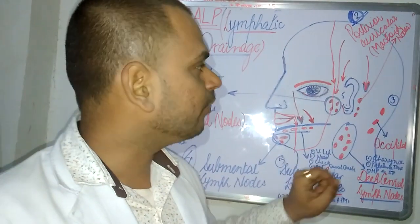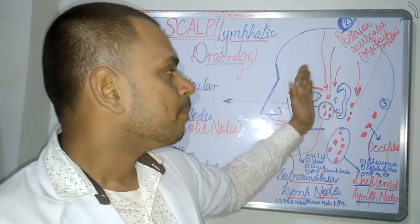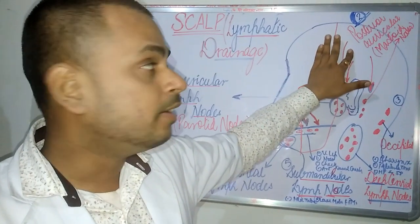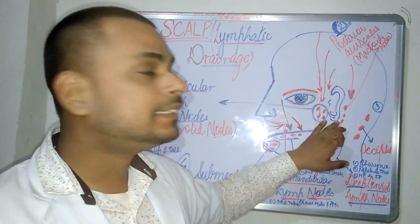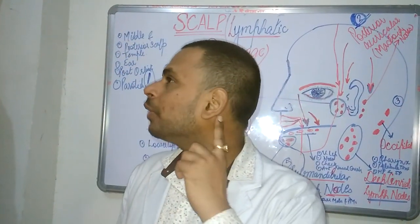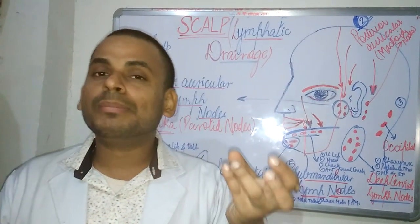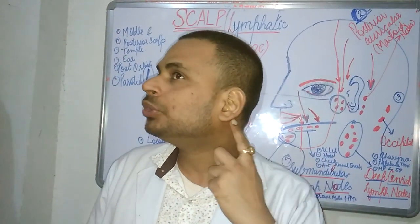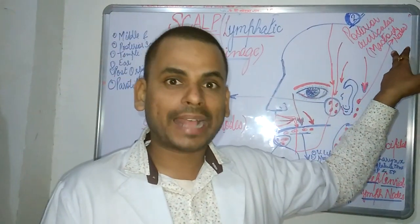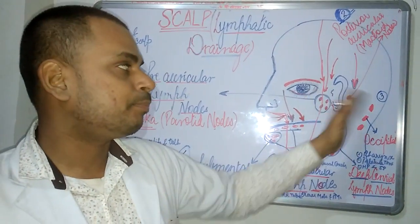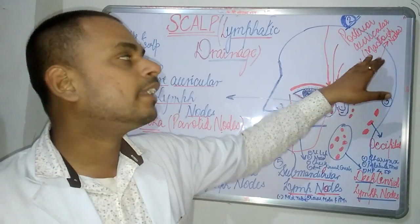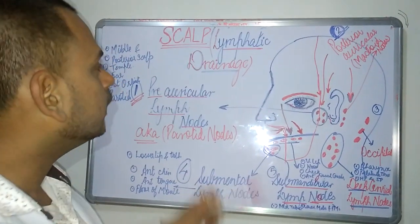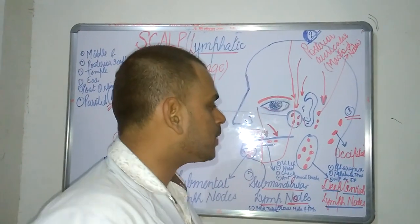Moving on to the posterior auricular lymph nodes — since these lymph nodes lie posterior to the auricle or external ear or pinna, they have been given the name posterior auricular lymph nodes. Since they lie adjacent to the mastoid process of the skull, they are also known as the mastoid nodes.